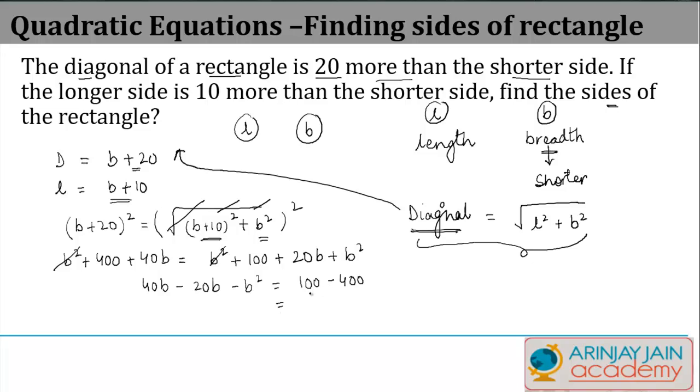Moving B squared to this side, we have B². 40B minus 20B gives 20B. When 20B moves to the other side it becomes minus 20B, and here we have minus 300 equals 0.